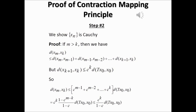In this lecture we're going to continue the proof of the contraction mapping principle. Specifically, we're going to show that the sequence x_n is a Cauchy sequence. Remember that means in the large m and n limit, the distance between the m-th term and the n-th term of the sequence has to be zero.